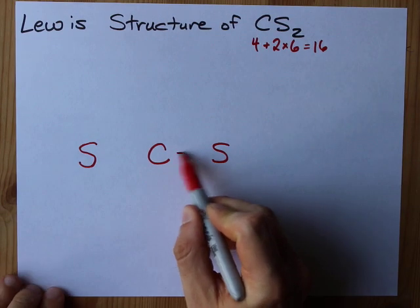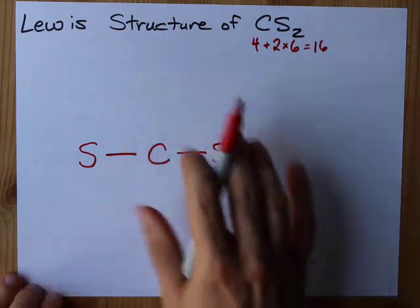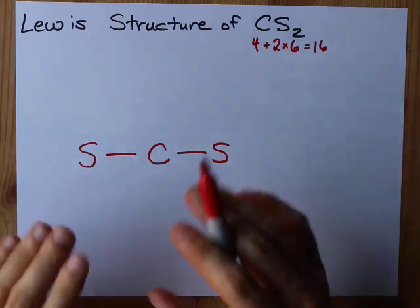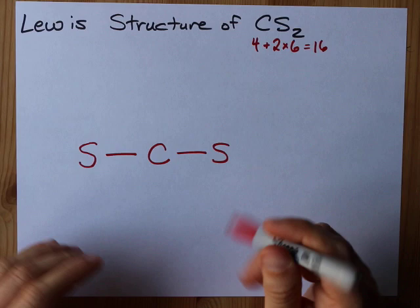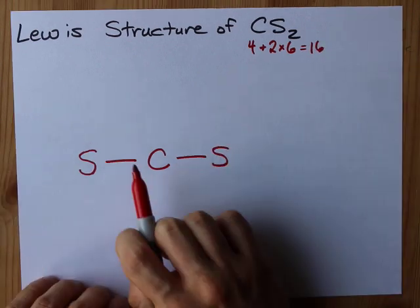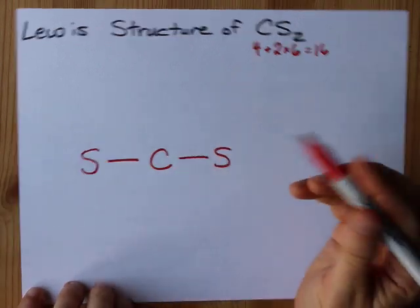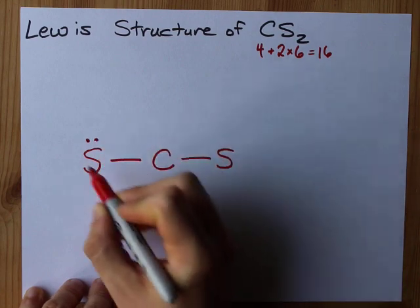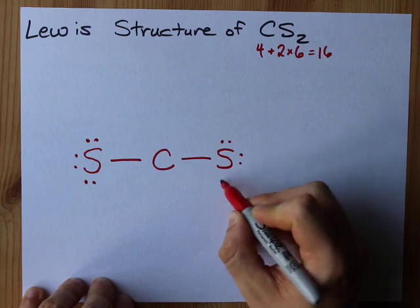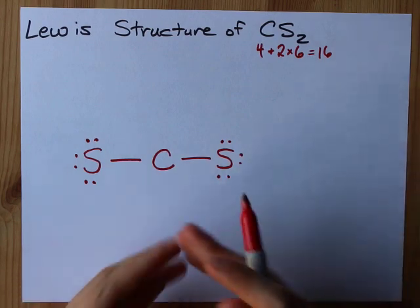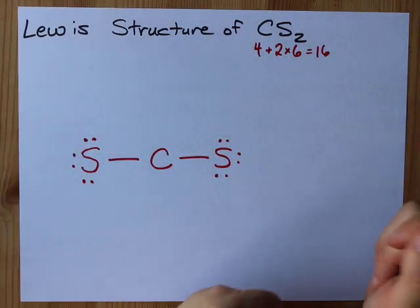I'm going to draw single bonds to connect. I always do that to hold it together in one molecule, but what I do next is I complete the octets on my outer atoms. I need 16 total and I've already put two, four electrons down. So, six, eight, ten, twelve, fourteen, sixteen electrons. I am out. I've got to stop here.